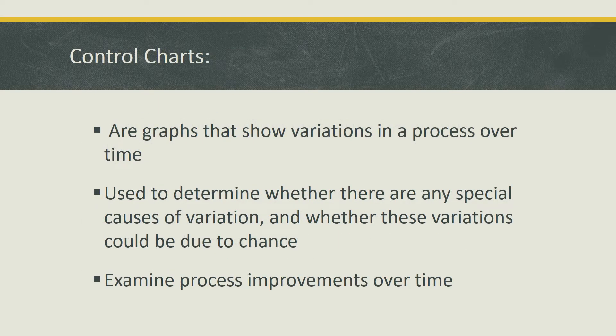In order to solve this problem, we'll need to create a control chart. Control charts serve many purposes. They're essentially graphs that show variations in a process over time and are used to determine whether there are any special causes of variation and whether these variations could be due to chance. Control charts also examine process improvements over time.